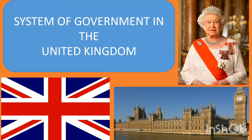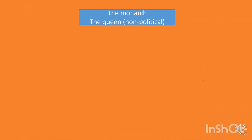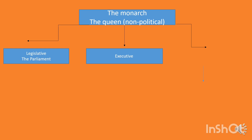The system of government in the United Kingdom is of high importance to understand, as we are going to start studying democracy in Great Britain. The system has the monarch — the queen — who is non-political, meaning citizens do not elect the queen in national elections. England is a constitutional monarchy, and we have the three powers: legislative, which is the parliament; executive; and judicial — the three powers as in any democracy.